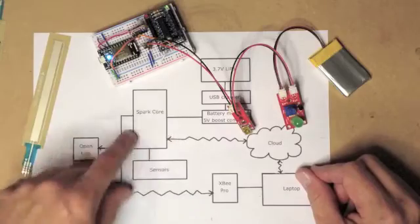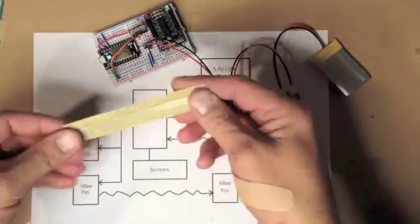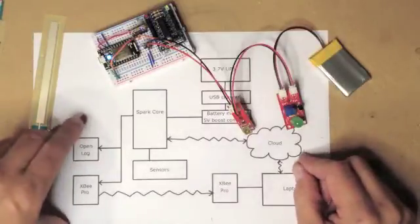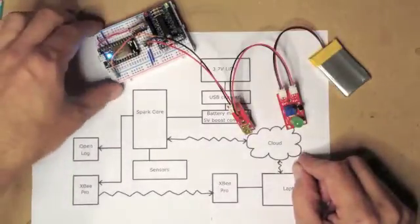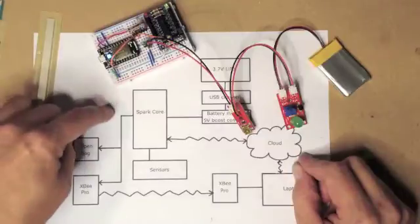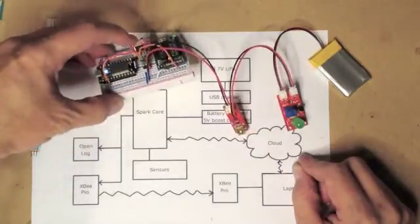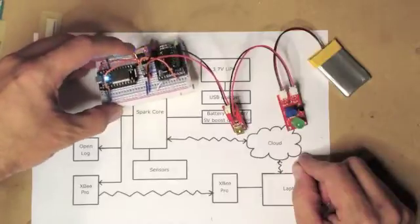And then it reads the sensor data. For sensors, I'm using some linear position sensors like this as well as some accelerometers. It reads that data from those sensors and outputs it to a SparkFun OpenLog, which is this little guy right here, and that records that data on an SD card.